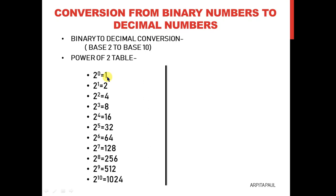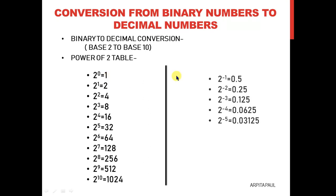Same way you have to memorize the power of 2 table for negative numbers also. This is how the negative power of 2 table looks like. The value starts from minus 1: 2 to the power of minus 1 equals 0.5. 2 to the power of minus 2 means 0.5 into 0.5, which becomes 0.25. 2 to the power of minus 3 becomes 0.125, that is 0.25 into 0.5. Same way, 2 to the power of minus 4 means 0.125 into 0.5, which becomes 0.0625. You have to memorize up to 2 to the power of minus 5 for the conversion.